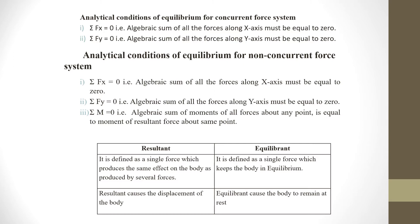We will see the comparison of resultant and equilibrium. Resultant is defined as a single force which produces the same effect on a body as produced by several forces — it has the same effect as all the other forces acting on the body. Equilibrium is defined as the single force which keeps the body in equilibrium. Resultant causes displacement of the body, but equilibrium causes the body to remain at rest.